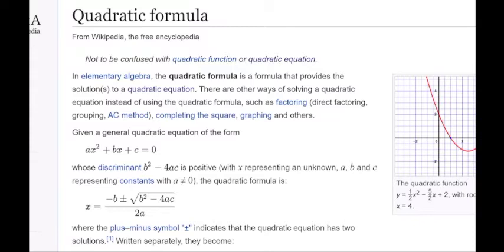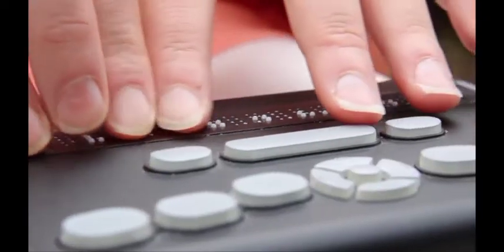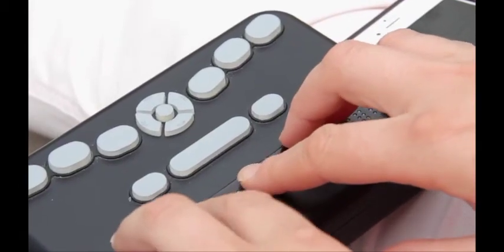The MathML has been processed using speech rules and is read aloud by the text to speech and shown in braille math notation if a braille display is connected.